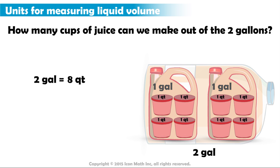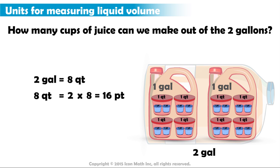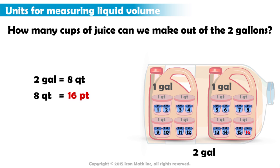We also know that a quart is equal to two pints. So, how many pints are there in eight quarts? Again, we multiply two by eight to get sixteen. So, we have sixteen pints.